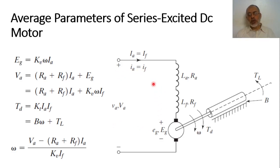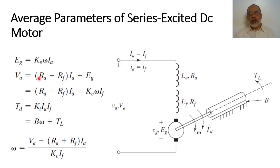Applying Kirchhoff's Voltage Law around the loop, the armature voltage Va equals the voltage drop across the armature and field resistances plus the back EMF. So Va = (Ra + Rf) × Ia + EG. The term (Ra + Rf) × Ia represents the voltage drop due to the resistance of the armature plus the resistance of the field coil, which are added together because they are in series.